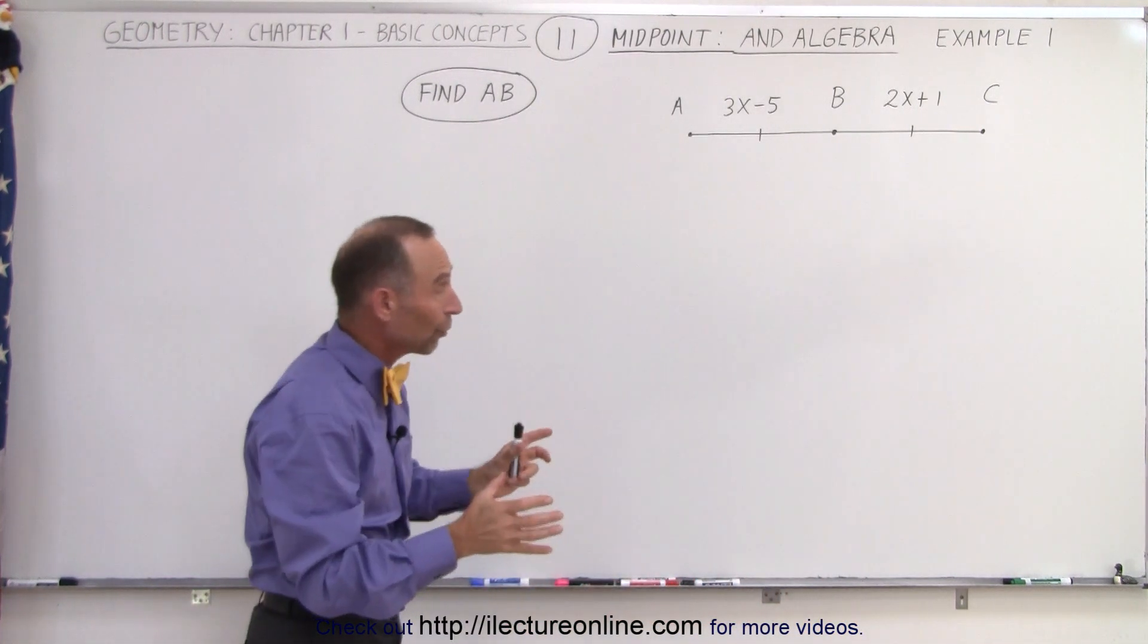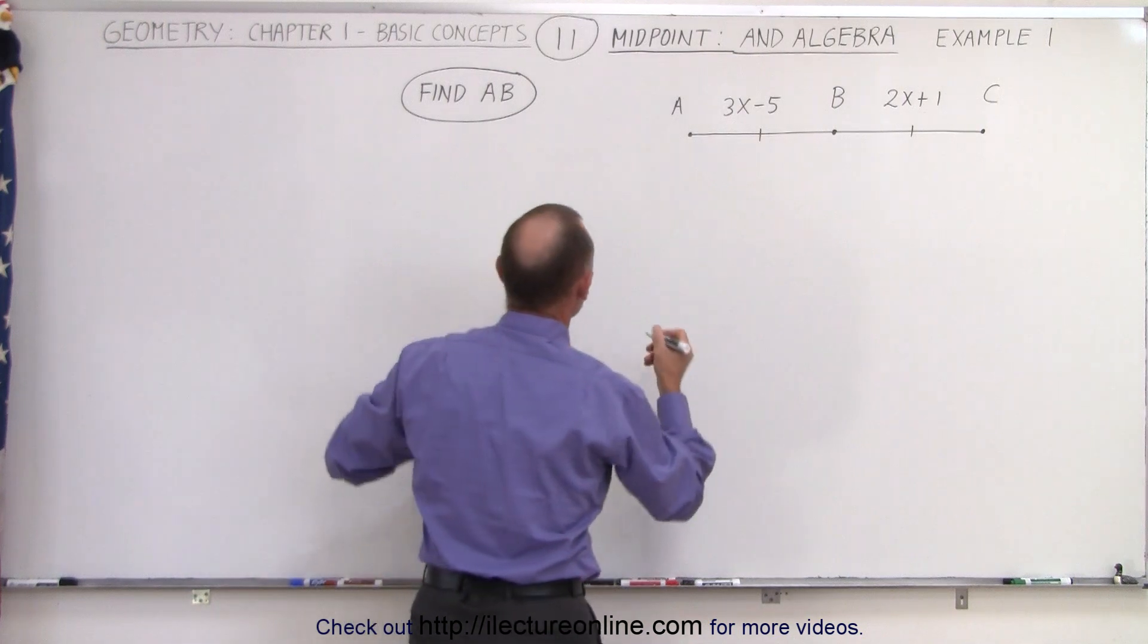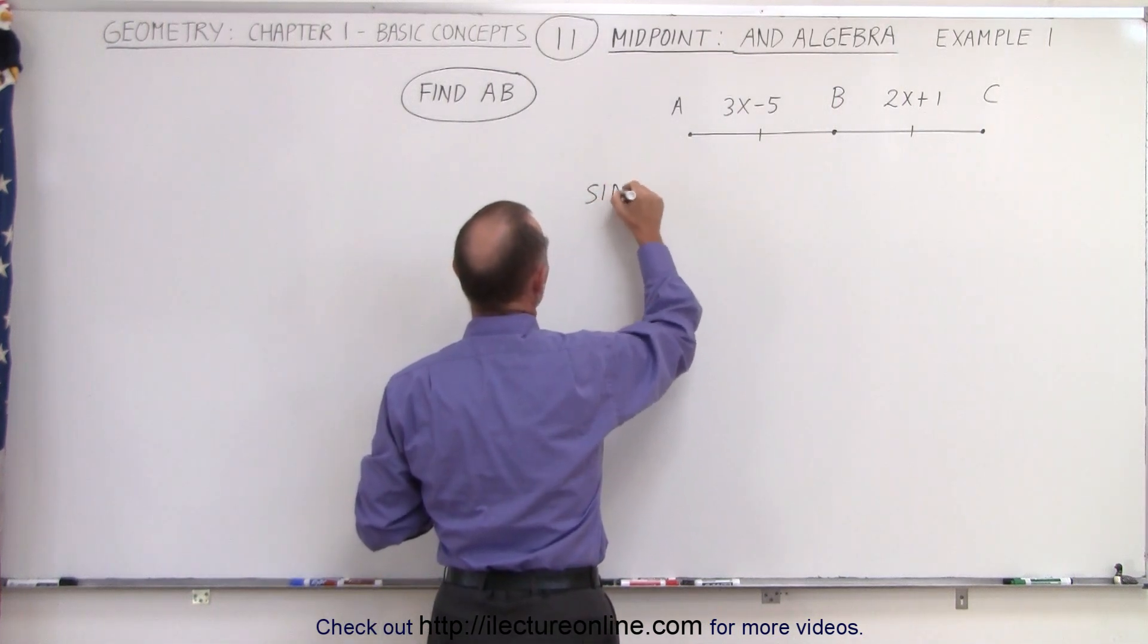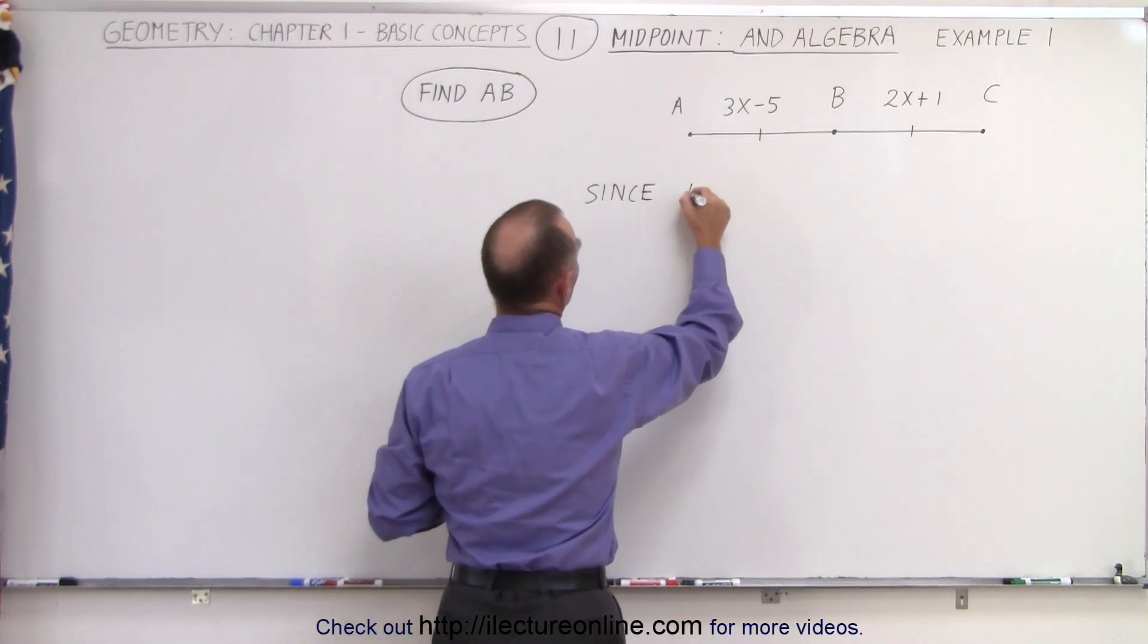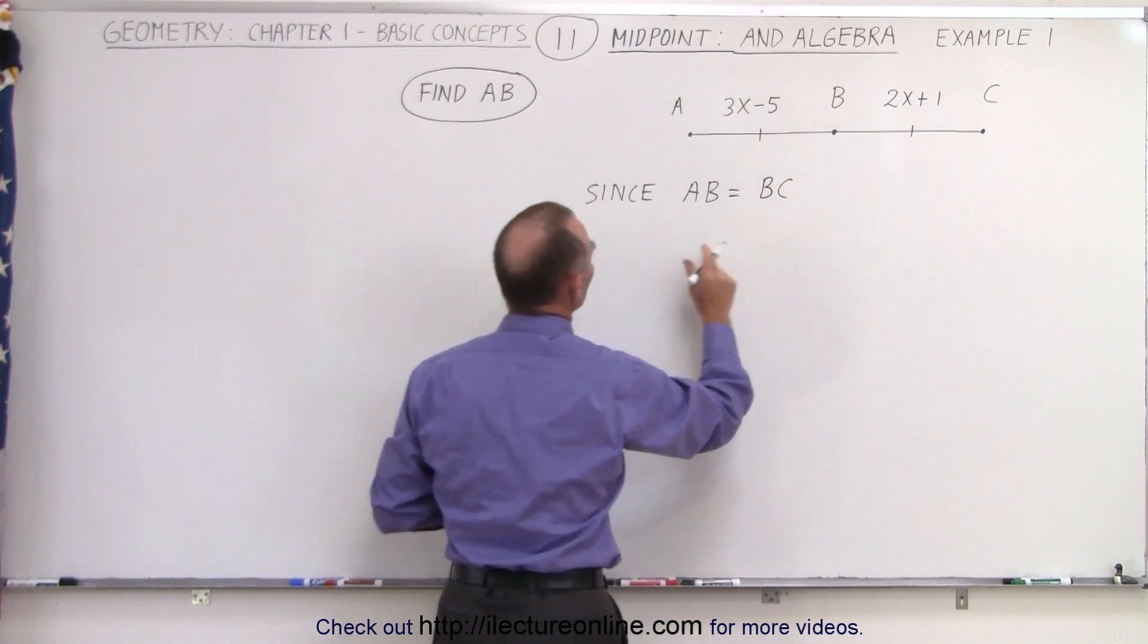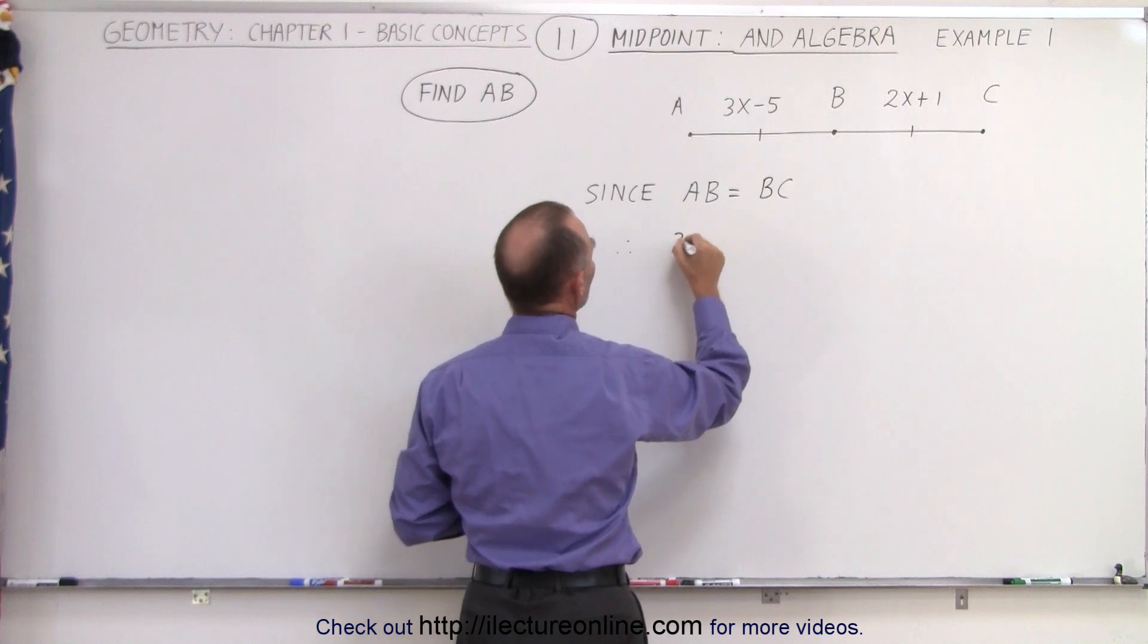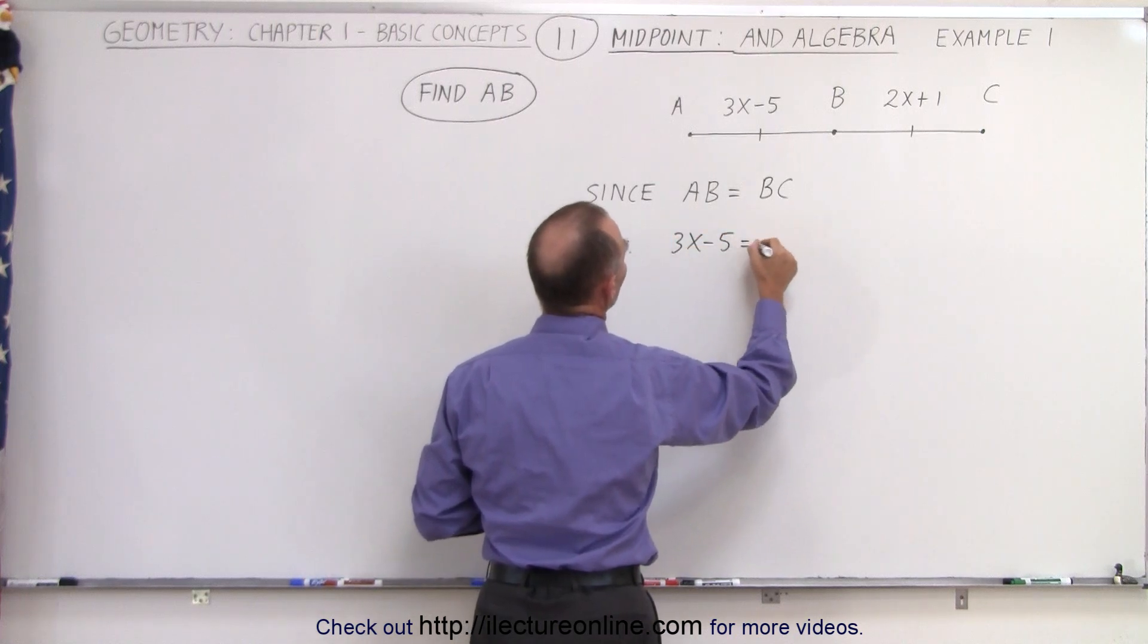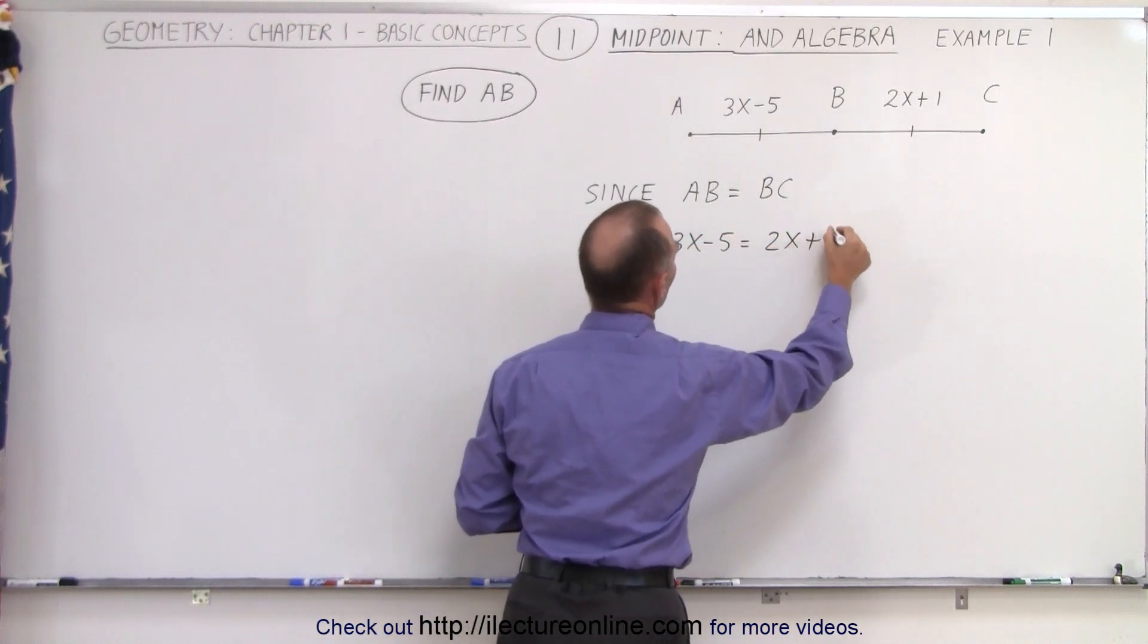Now since the lengths are equal to each other, we can say that since AB is equal to BC, therefore 3x minus 5 must equal 2x plus 1.